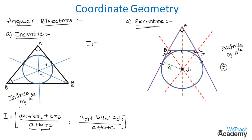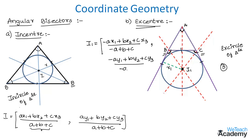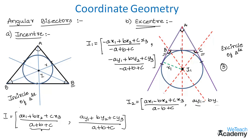The coordinates of excenter I1 are: I1 = ((−a·x1 + b·x2 + c·x3)/(−a + b + c), (−a·y1 + b·y2 + c·y3)/(−a + b + c)). The excenter I2 = ((a·x1 − b·x2 + c·x3)/(a − b + c), (a·y1 − b·y2 + c·y3)/(a − b + c)). Similarly, the formula gives the coordinates of excenter I3.